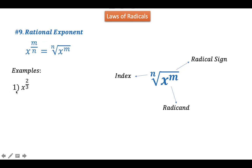In our given example, x raised to 2 thirds — the exponent is a fraction, so this can be written in radical form as the cube root of x squared. We draw a radical sign, the base becomes the radicand, the numerator becomes the exponent of the radicand, and the denominator becomes the index.